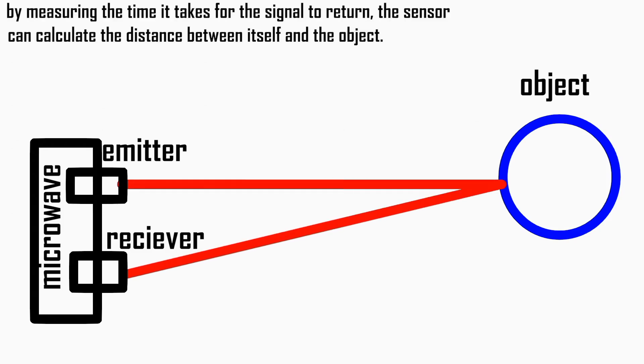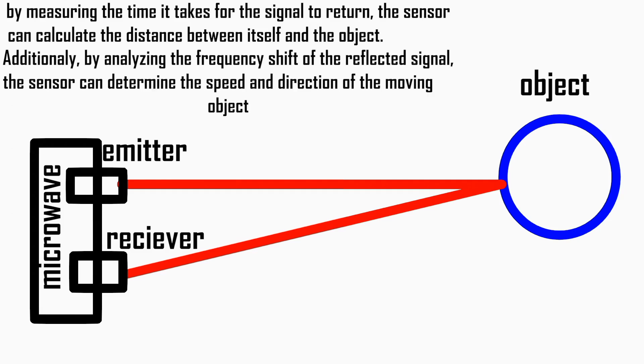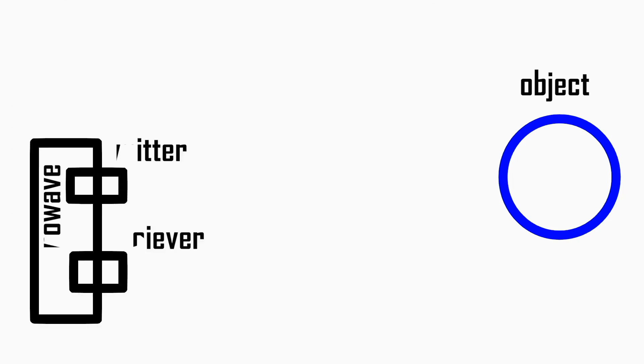Additionally, by analyzing the frequency shift of the reflected signal, the sensor can determine the speed and direction of the moving object.